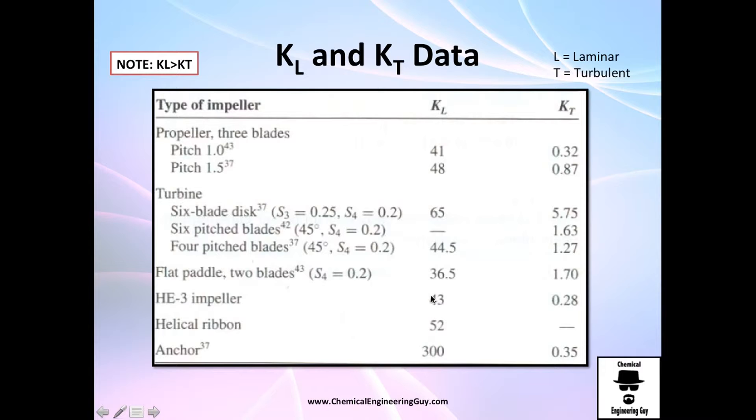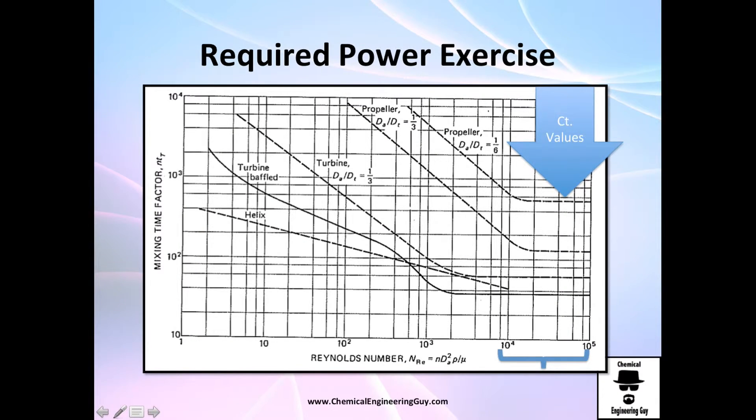It's similar. The type of impeller you have: propeller, turbine, anchor, paddle—whether it's three-bladed, six-bladed, four-bladed, two-bladed. Once you find out what is the KT value, let's do this exercise. For Reynolds number very, very high, we have a very constant factor here. We have propeller for one-third of the ratio of diameter of impeller and tank, one-sixth turbine baffle, and helix.